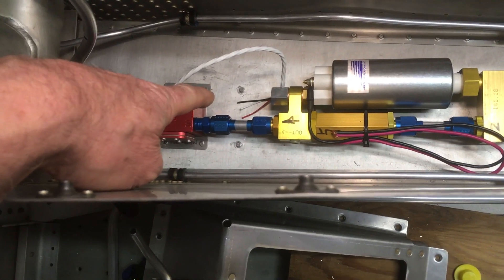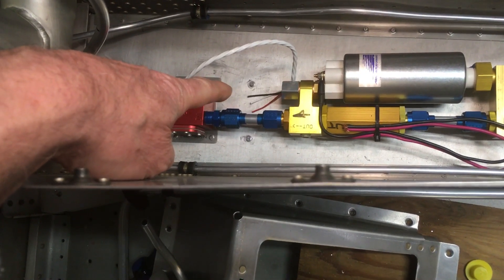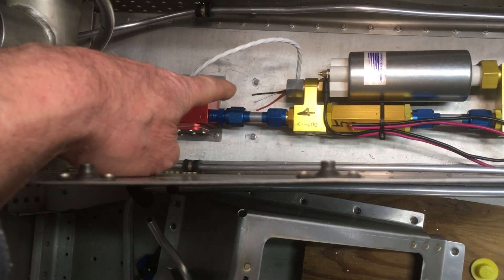You can see the set of holes right there that are filled with rivets. That's where the original skin was already pre-punched and dimpled.